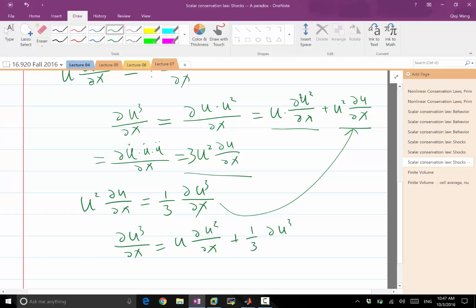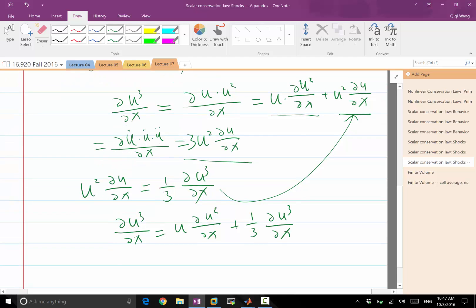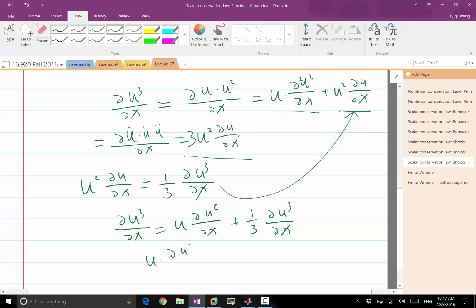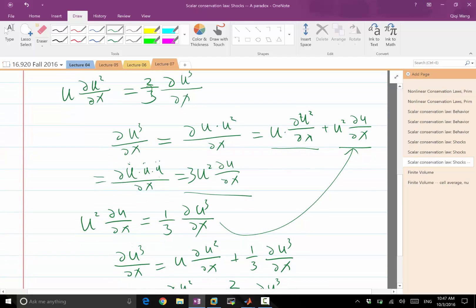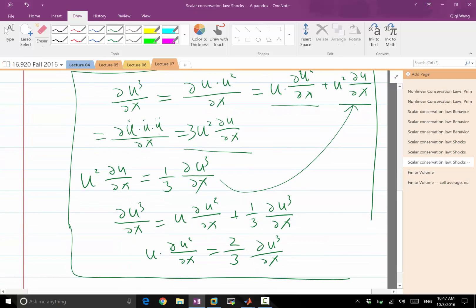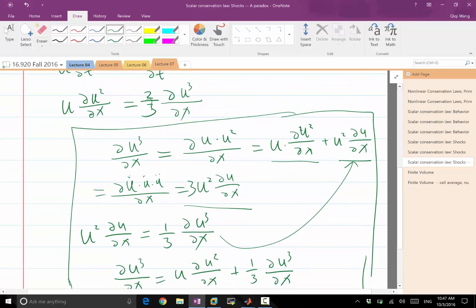Which means U times ∂U²/∂x equals two thirds of ∂U³/∂x. So this is going to be two thirds. That's the whole derivation of this.